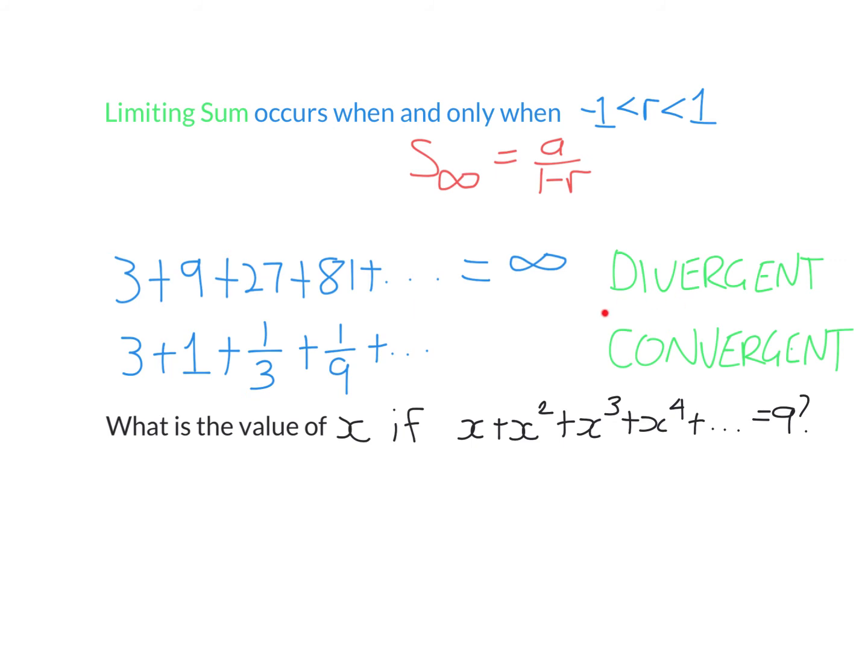So if I have a convergent sequence, how do I calculate the limiting sum? It's a very simple formula here. This sum will just converge to A, first term, over 1 minus R, which is equal to 4.5. So if I keep adding more and more terms to this sum, it will get closer and closer and closer to, but never fully reach, 4.5.